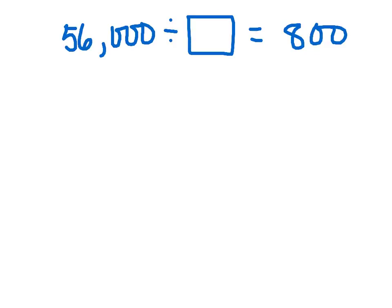Let's try another one of those. Let's say 56,000 divided by something equals 800. Okay, so we're dealing with 8 and 56. I know there's a 7 in there, right? Because 7 times 8 is going to give me 56. But let's just kind of look at this.